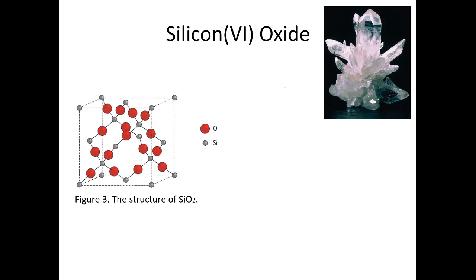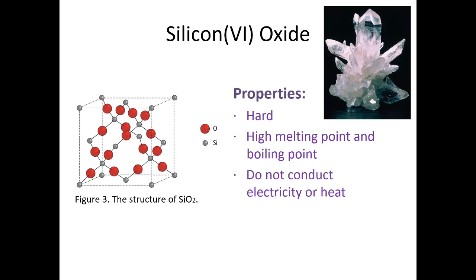SiO2 has properties similar to that of diamond. It forms hard, colorless crystals with high melting and boiling points, and it does not conduct electricity or heat.